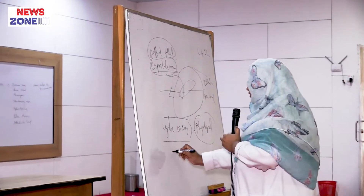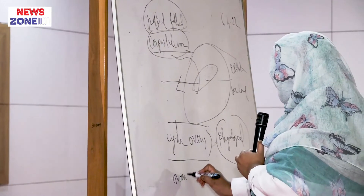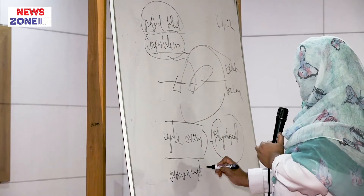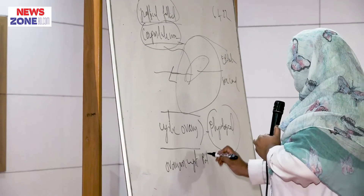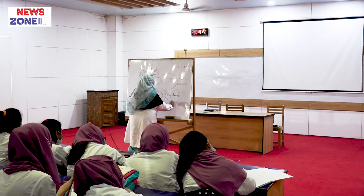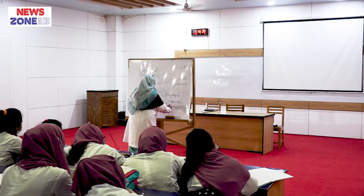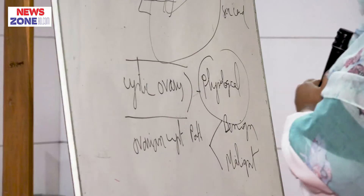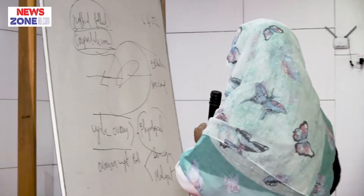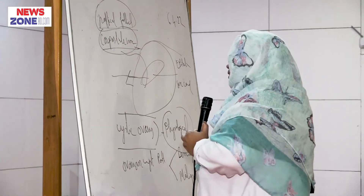Coming back to ovarian tumors — ovarian cyst is pathological. These are of two parts: benign and malignant. I will discuss the swelling and enlargement of the ovary — ovarian enlargement.